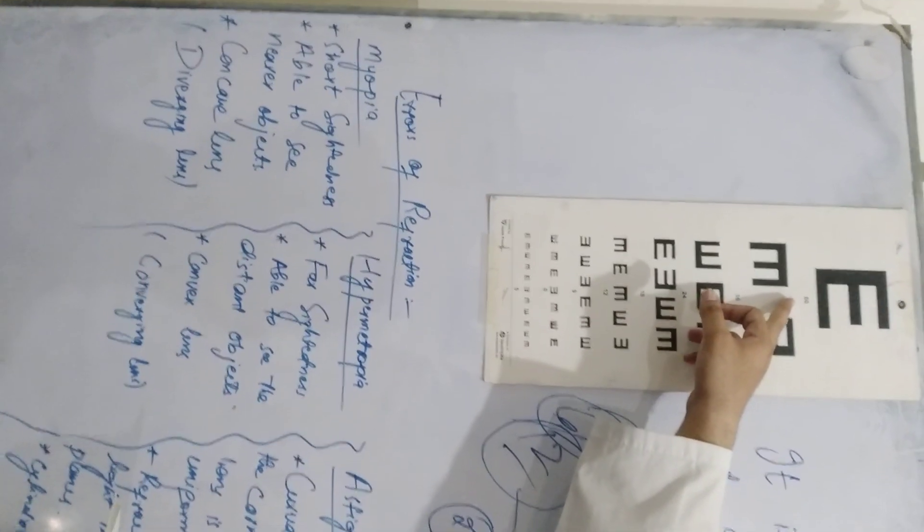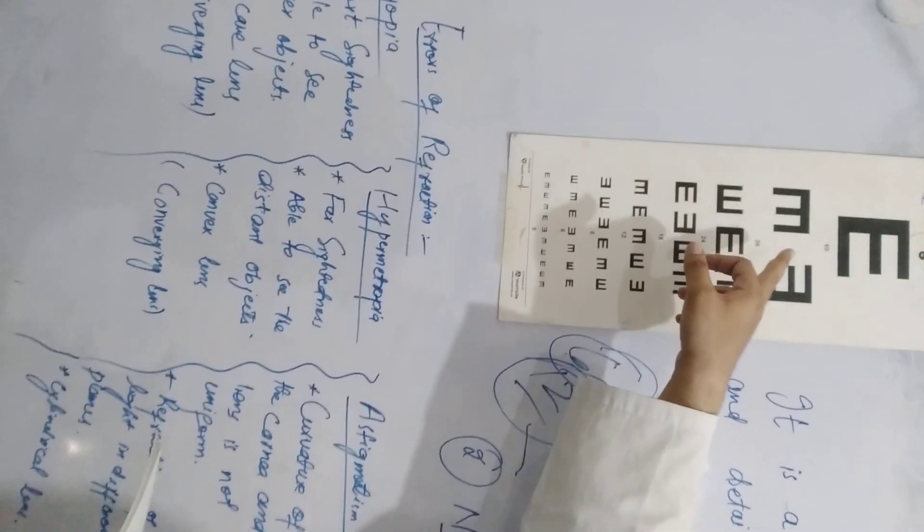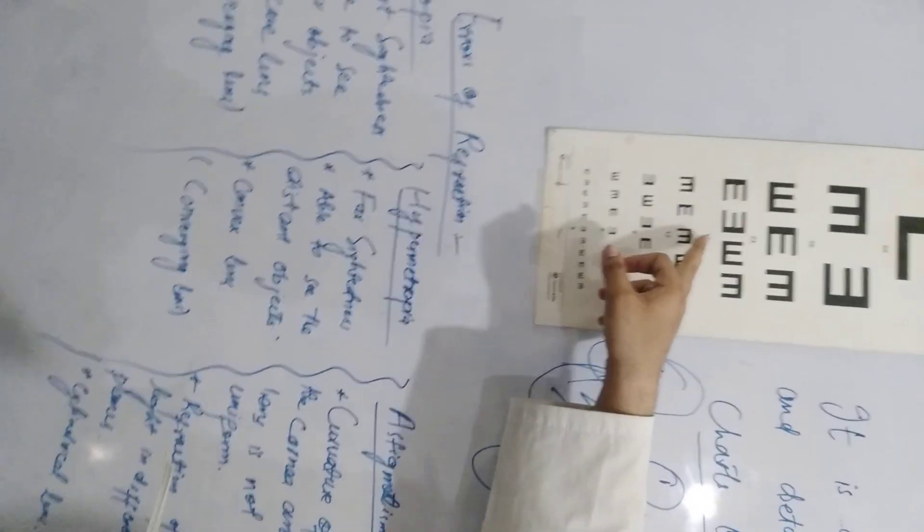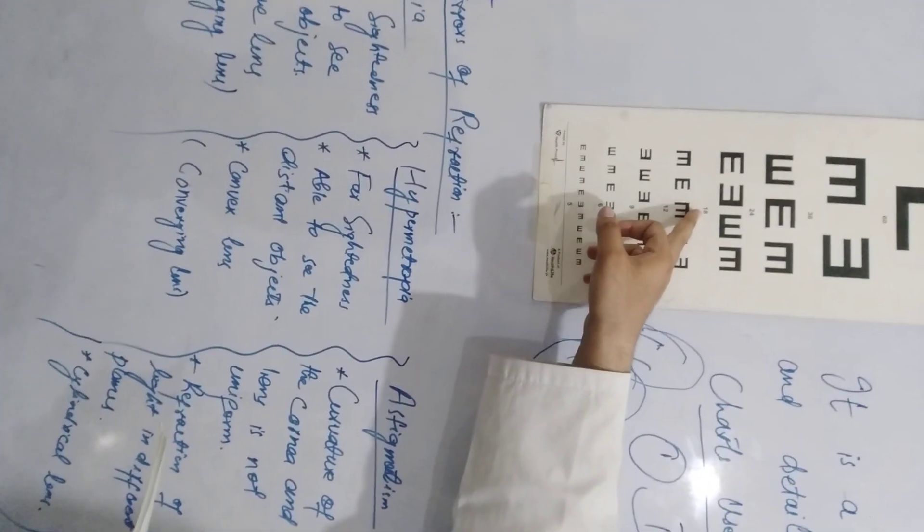If the patient is reading from 6 meters to 2 meters, it is 6/60 clear. This is 6/36 clear. 24-13 clear. If not reading the patient, it will be 6/18.